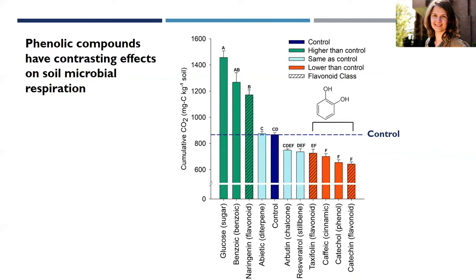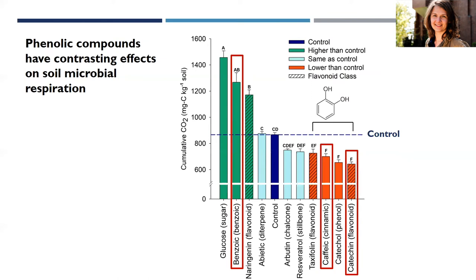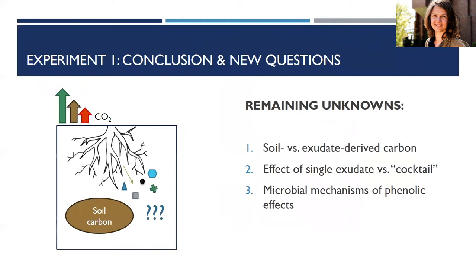For my next experiment, remember these three compounds: benzoic acid, which increased respiration, and caffeic acid and catechin, which decreased respiration. Overall, from this first experiment I can conclude that roots exude a large variety of phenolic compounds, that phenolic profiles are quite unique to each species, and that these compounds can result in a variety of effects on soil microbial respiration.